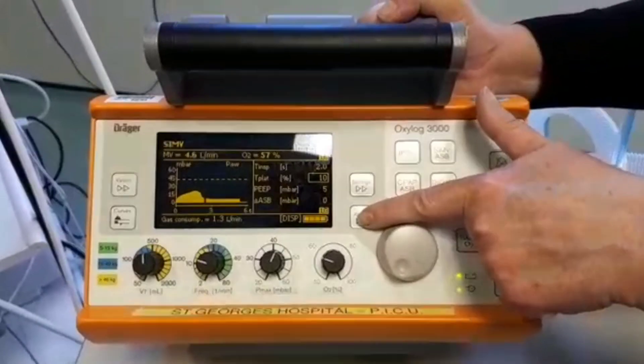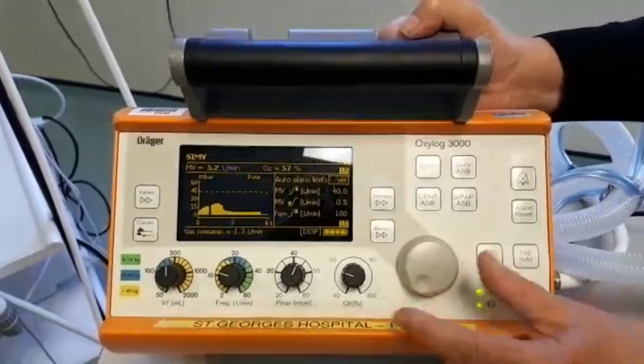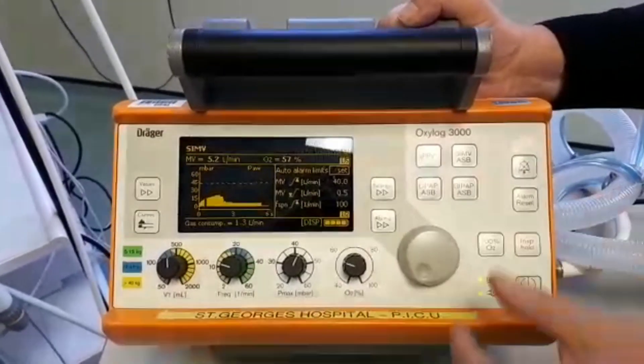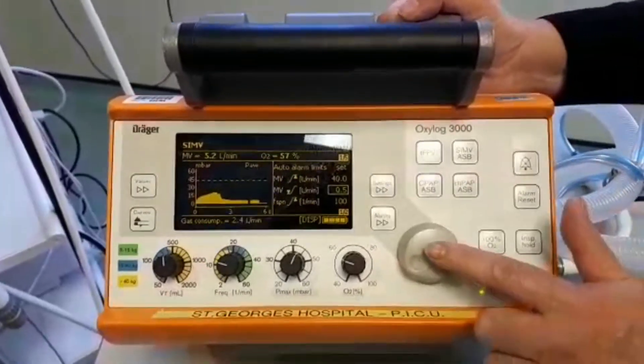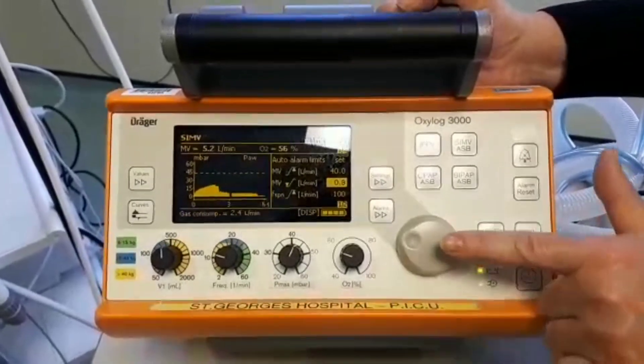We set our alarms using the alarm key. Again, exactly the same as settings, we have more than one page. You press the alarms to access the pages, use the control knob to highlight the parameter you wish to change, press to confirm to enter, change, and press to confirm.